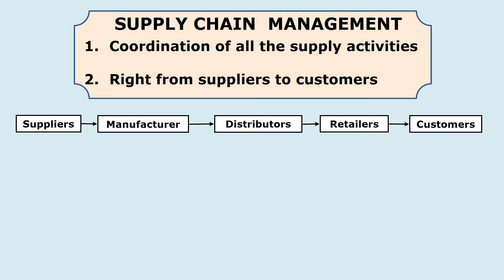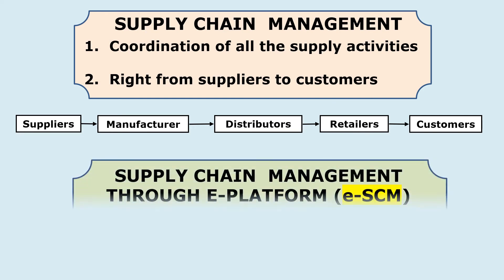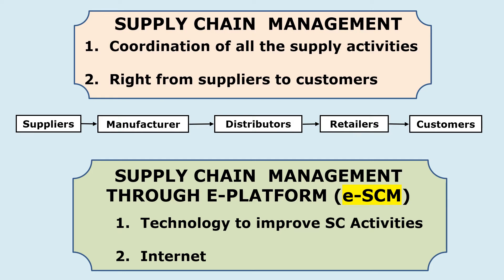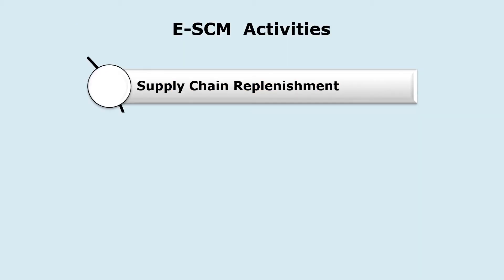Different materials move from one location to another, and the entire process is managed and coordinated — that is supply chain management. E-supply chain management is the same supply chain management in which technology, specifically the internet, is used to improve supply chain activities and coordination.